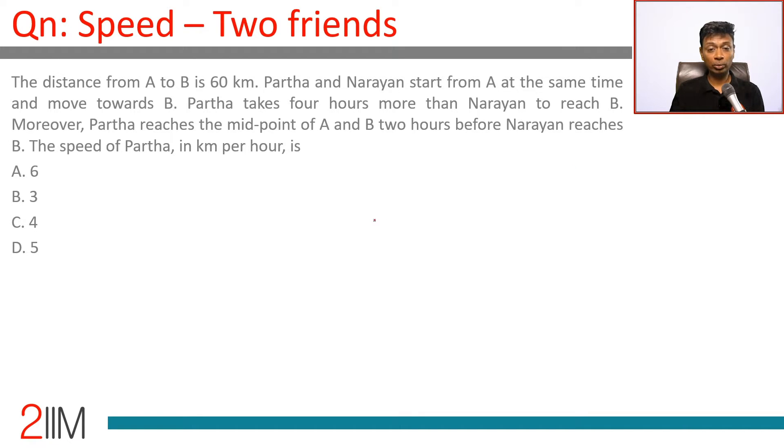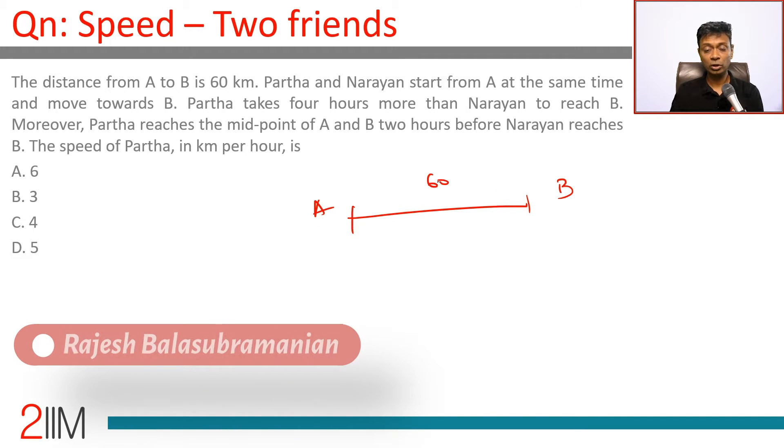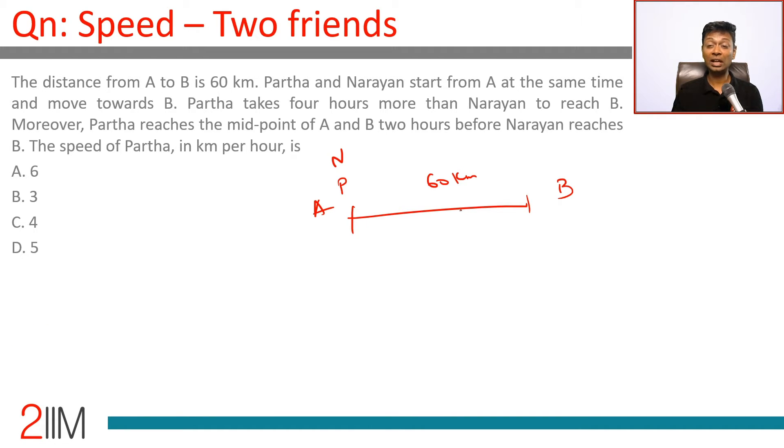The distance from A to B is 60 kilometers. Partha and Narayan start from A at the same time and move towards B. Partha takes four hours more than Narayan to reach B.